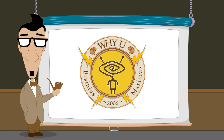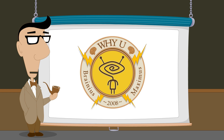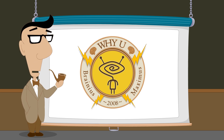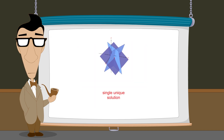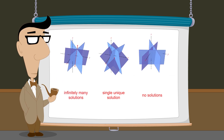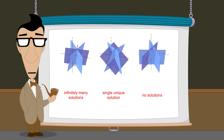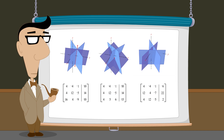Hello, I'm Professor Von Schmohawk and welcome to Why U. So far, we have studied systems of linear equations which have single unique solutions, infinitely many solutions, or no solutions. We have seen that when those systems are represented as augmented matrices, it is easy to tell which type of solutions the system has once the matrix has been transformed to reduced row echelon form through the process of Gauss-Jordan elimination.